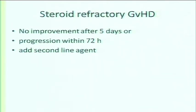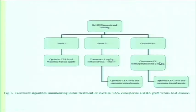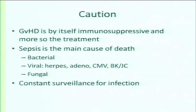If there is no improvement after 5 days or progression within 72 hours, this is steroid-refractory graft-versus-host disease. There are second- and third-line agent algorithms available. An important caution: GVHD is itself immunosuppressive — the immune system targets something but neglects protective functions. Treating GVHD with steroids and other agents leaves the patient as a sitting duck for infection.